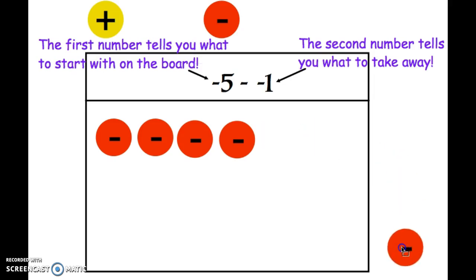You always have to make sure you start, I only have negative 5 on the board right now and I'm going to take away one negative. So once I take away that one negative, notice all that's left is negative 4. That means negative 5 minus negative 1 is negative 4.